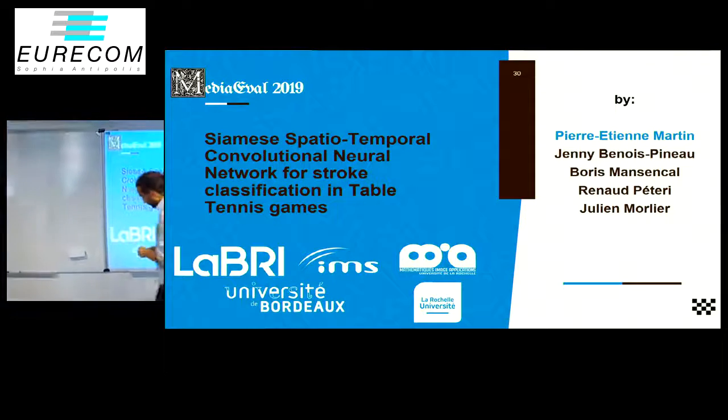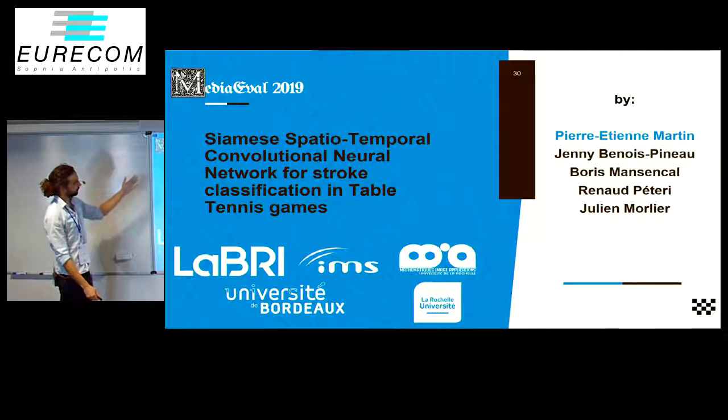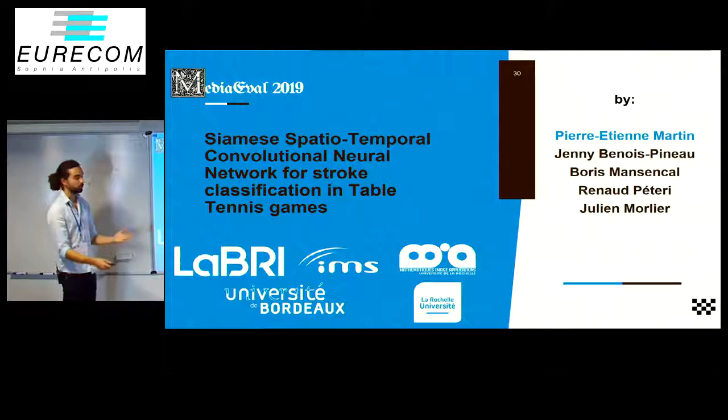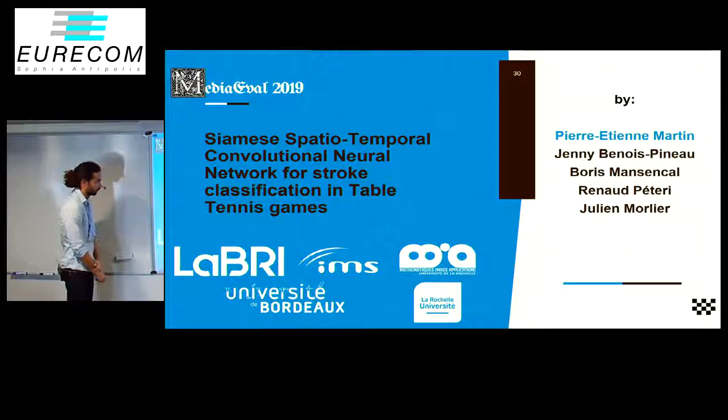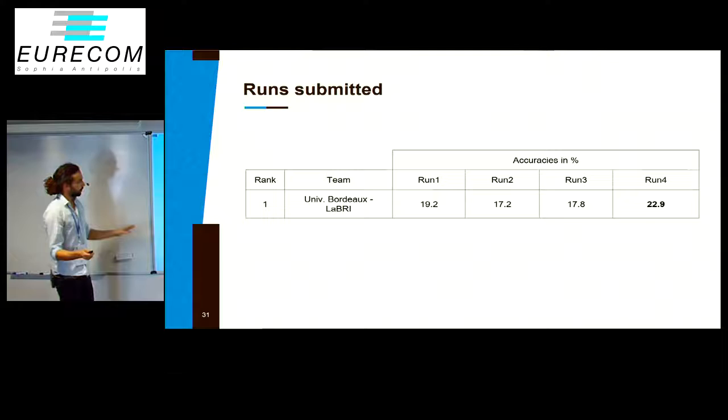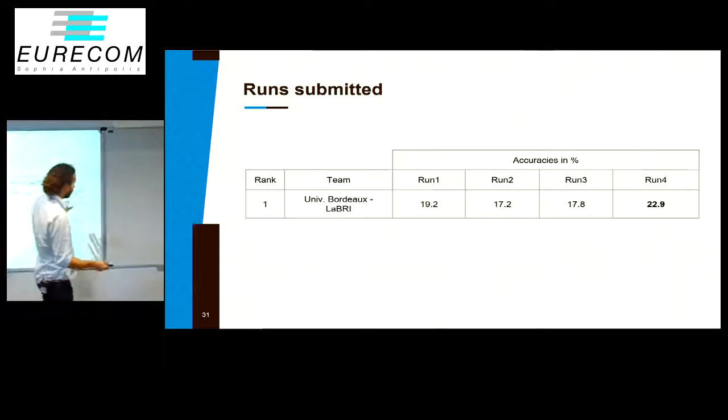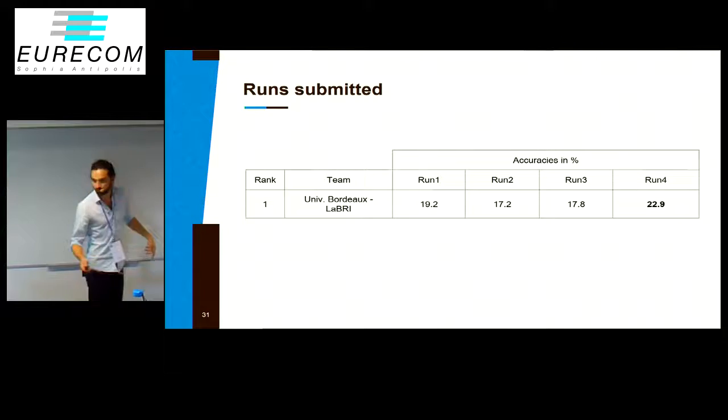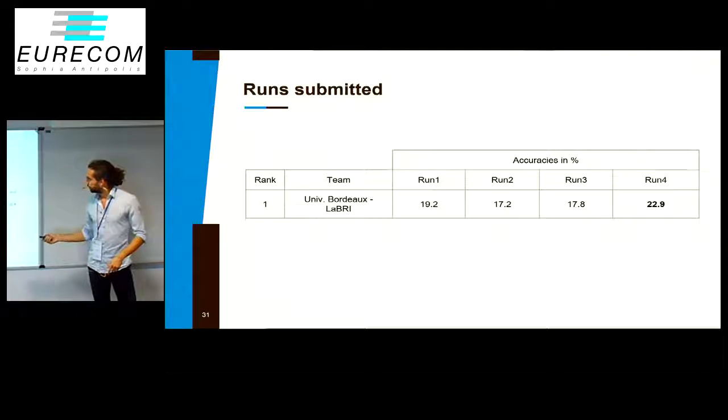Now you know my name. We are organizers but also participants, and we use the Siamese Spatial Temporal Convolutional Neural Network for stroke classification in table tennis games. We submitted four runs, and our best run achieved 23 percent.